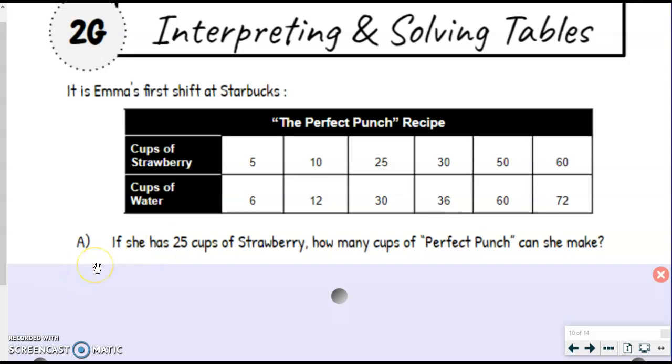We're still going to follow that same strategy. It says if she has 25 cups of strawberry, how many cups of Perfect Punch can she make? This time it's not just about finding what's on the table and then looking at the next row. We have to do just a little bit more math on this one. Perfect Punch is when you combine the strawberry and water together. That's what the whole recipe is. So we know that we have 25 cups of strawberries. I'm still going to find that on the table, which would be right here.